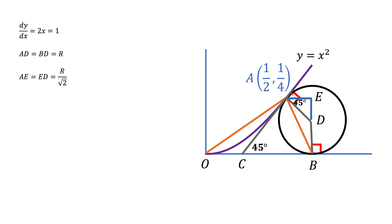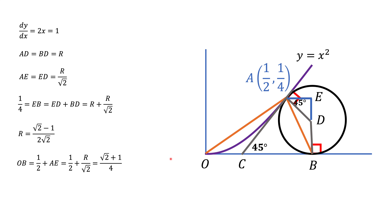The vertical coordinate of point A is one-quarter. On the other hand, it equals the distance EB, which is R over square root of 2 plus R. This gives us an equation we can solve to find R. The distance OB equals the horizontal coordinate of point B, which equals the horizontal coordinate of point E — that is, the horizontal coordinate of point A, which is one-half, plus the distance AE. Adding these gives the horizontal coordinate of point B, and we're now ready to calculate the area of triangle OAB.